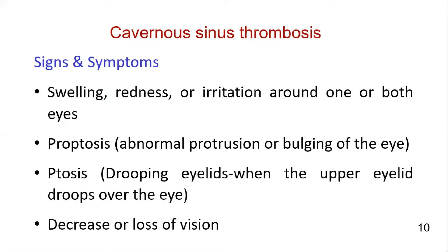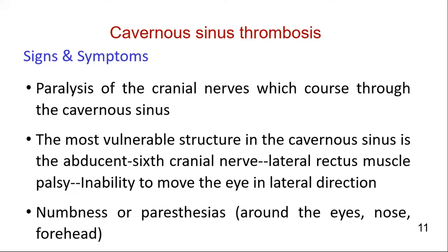In most cases of cavernous sinus thrombosis, the eyes are affected. Signs and symptoms include swelling, redness or irritation around one or both eyes, proptosis, and congestion of the retinal veins, which may lead to decreased or loss of vision. On clinical examination, the abducent nerve is most likely to be affected, causing lateral rectus muscle palsy, because its exposure within the cavernous sinus is greatest. Similarly, the sensory component is also affected, causing numbness or paresthesia around the eyes, nose, and forehead.